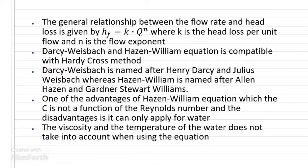Darcy-Weisbach and Hazen-William equation is compatible with Hardy-Cross method. Darcy-Weisbach is named after Henry Darcy and Julius Weisbach, whereas Hazen-William is named after Allen Hazen and Gardner Stewart Williams. One advantage of Hazen-William equation is that C is not a function of Reynolds number. The disadvantage is it can only apply for water. The viscosity and temperature of the water does not take into account when using the equation.